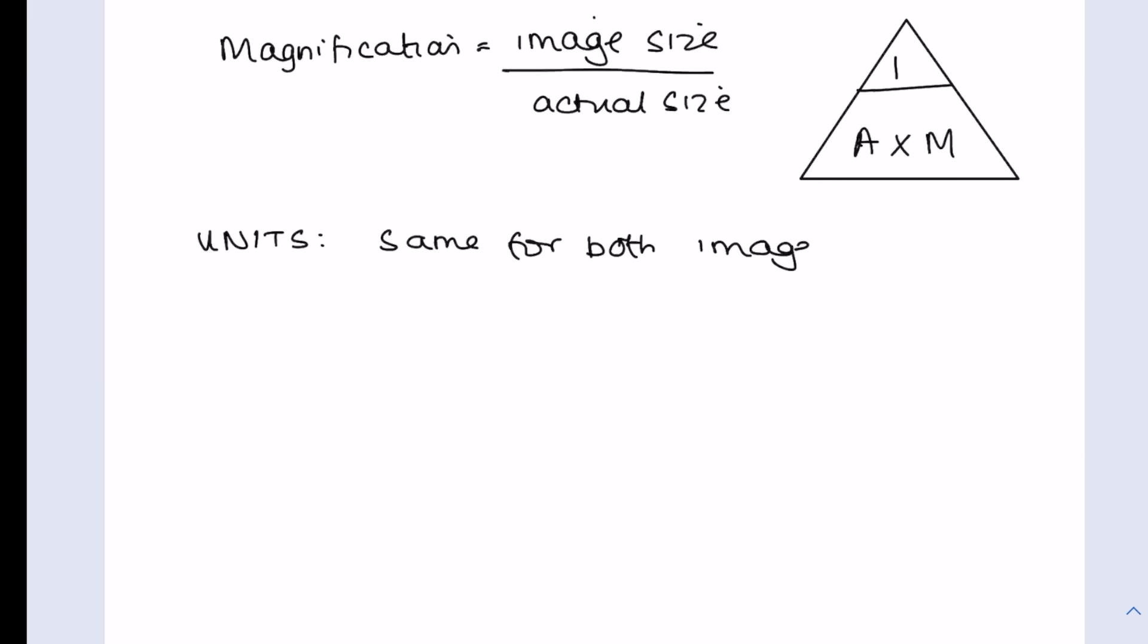A couple of other things I wanted to mention, which is that remember magnification. If I use this formula triangle looks like this: magnification equals image size over actual size. Just be careful with your units. They need to be the same for both image and actual size. So that could be both in millimeters or micrometers or even centimeters. Just be careful if you need to convert any of your units. Millimeters to micrometers you need to times by a thousand, centimeters to millimeters you just times by 10.